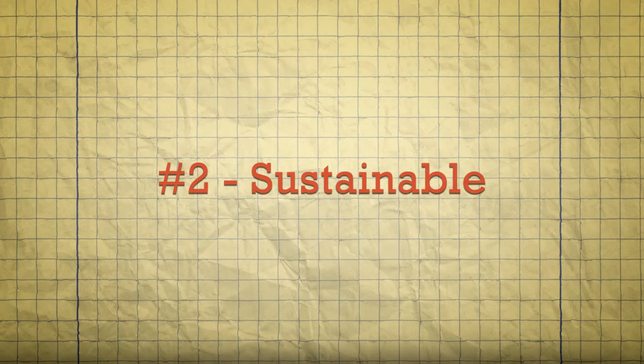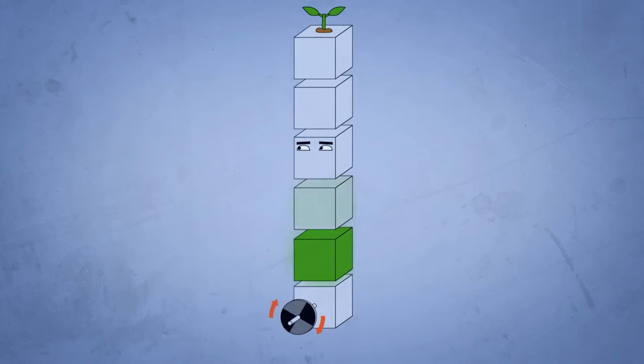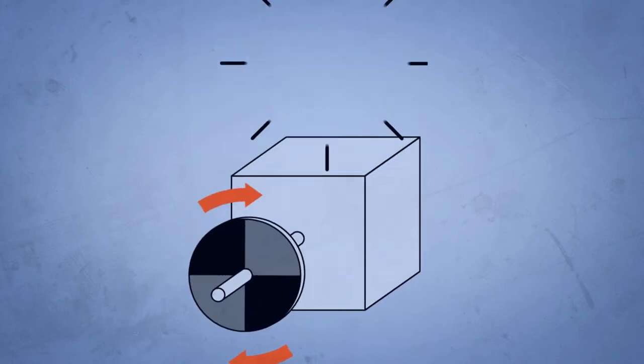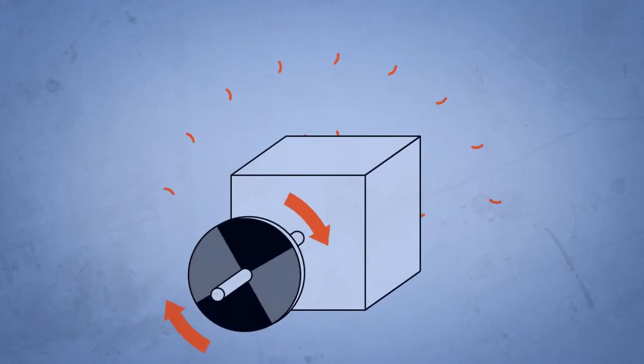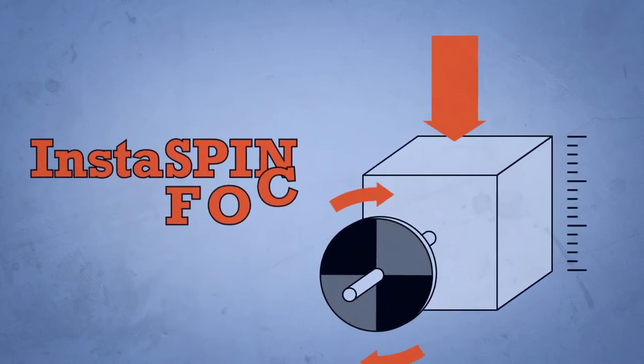InstaSpin FOC is a sustainable system. Energy efficiency is maximized by a highly optimized control strategy. Therefore, less heat must be dissipated, and a smaller motor can be specified using InstaSpin FOC.